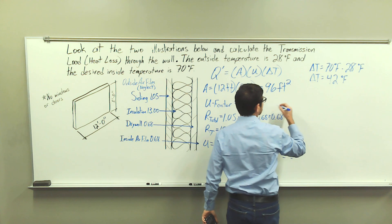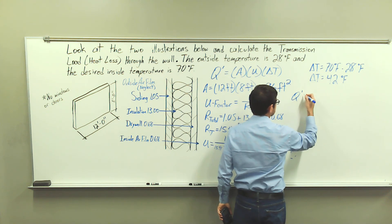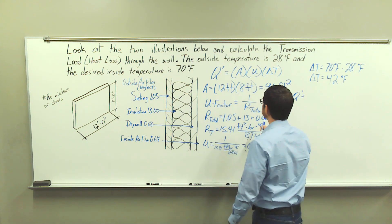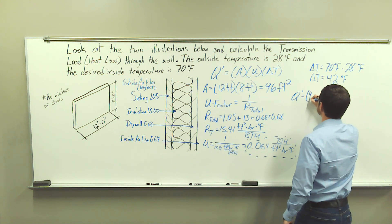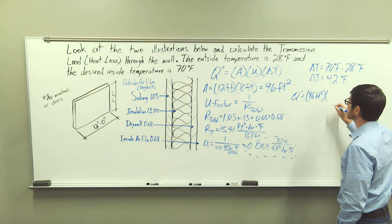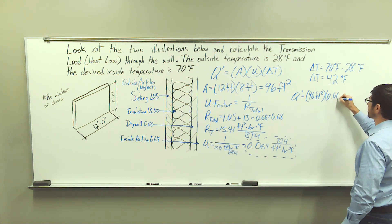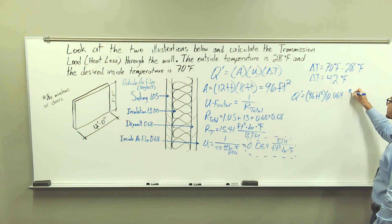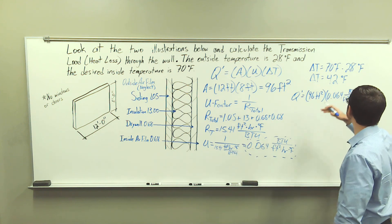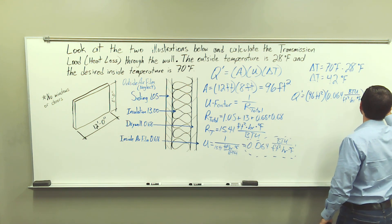So what we're going to do, Q prime, my area is 96 square feet. My U factor is going to be 0.064, and we have units of British thermal unit per foot squared hour degrees Fahrenheit, multiplied by our temperature difference, which is going to be 42 degrees Fahrenheit.